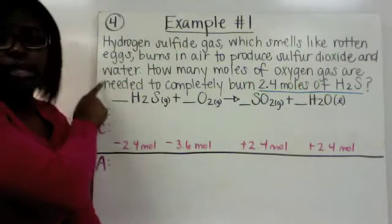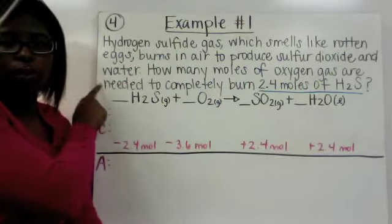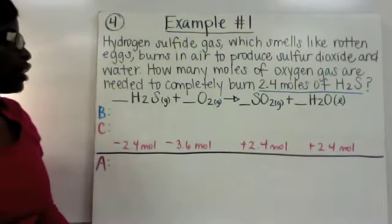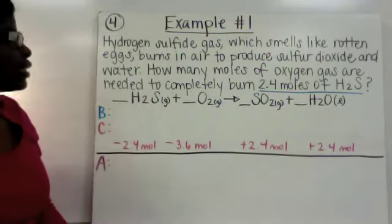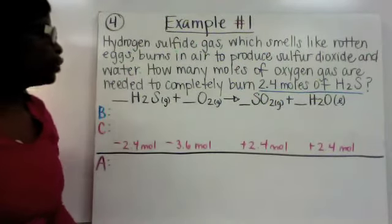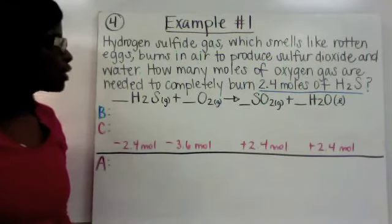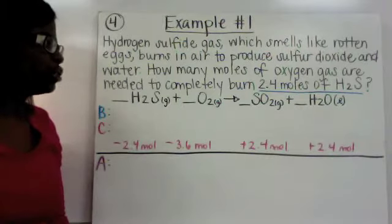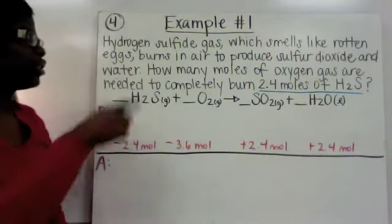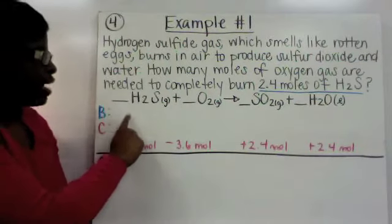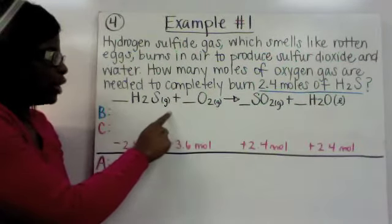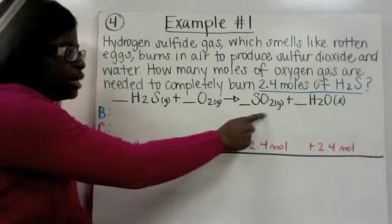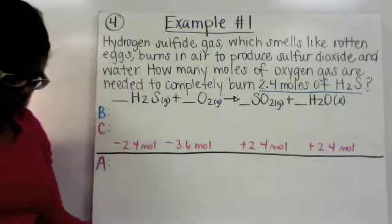This is our first example. You don't need to copy down the word problem itself, but you do need to copy down your balanced equation. It says hydrogen sulfide gas, which smells like rotten eggs, burns in air to produce sulfur dioxide and water. How many moles of oxygen gas are needed to completely burn 2.4 moles of H2S, which is your hydrogen sulfide gas? They have the setup of the equation for you: H2S gas plus oxygen gas is going to produce sulfur dioxide gas and water, which is a liquid.